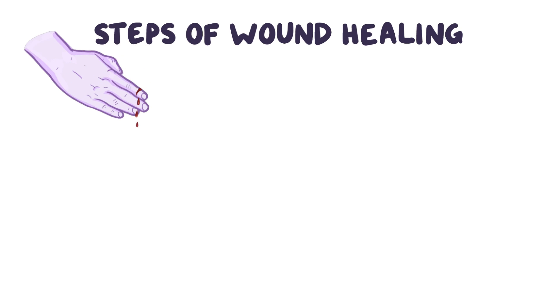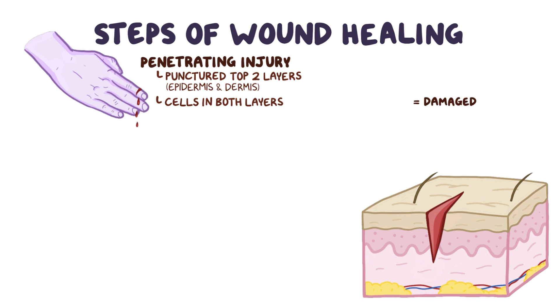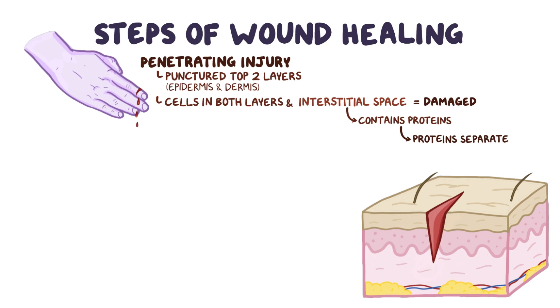To explain the steps of wound healing, let's imagine that you're cutting a banana cream pie and you accidentally slip and cut your finger. During a penetrating injury like this, the skin is punctured through the top two layers of skin, the epidermis and the dermis. When this happens, damage occurs to both the cells found in these layers and the area between the cells, called the interstitial space. The interstitial space contains proteins outside of the cell that act like scaffolding between cells, so when this is damaged, the cells separate, forming the open wound.